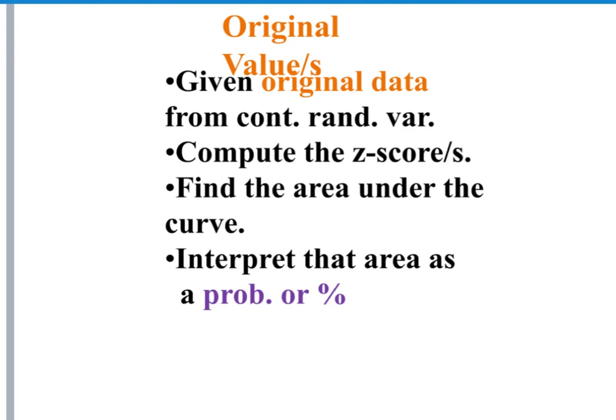So given original data, we have taken that original data from a continuous random variable. We have computed the z-scores. We found the area under the curve, and we've interpreted that area as a probability, or a proportion, or a percentile. And then we have also worked from the probability, percentile, or proportion. We've interpreted that as the area under the curve, and we have moved back to the original value. We can calculate in either direction. Now, I would like to show you all of these calculations on Minitab, but I feel like that is better done in person, or as in person as we can get online in Blackboard Collaborate. I will do one more short video on assessing normality. See me there.